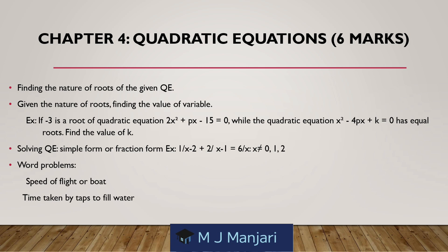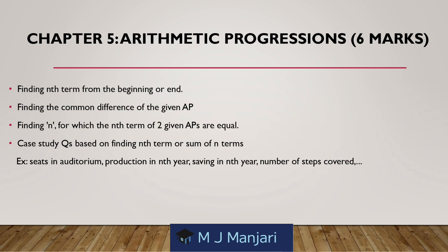Chapter 4: Quadratic Equations — weightage 6 marks. Topics: finding the nature of roots of a given quadratic equation; given the nature of roots, finding the value of the variable — for example, if minus 3 is the root of 2x² plus px minus 15 is equal to 0, while the quadratic equation x² minus 4px plus k is equal to 0 has equal roots, find the value of k; solving quadratic equations in simple or fractional form; and word problems on speed of flight or boat, and time taken by a tap to fill water.